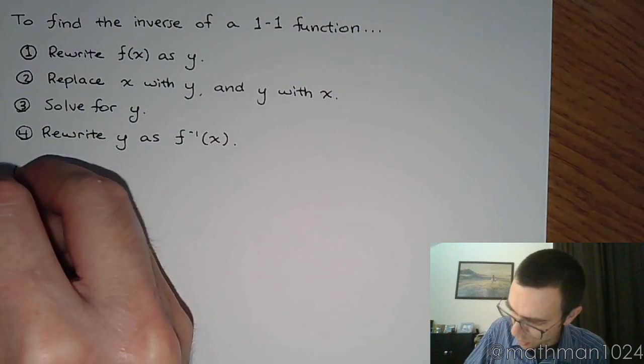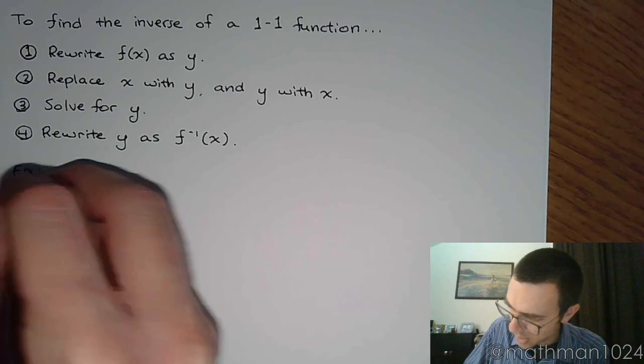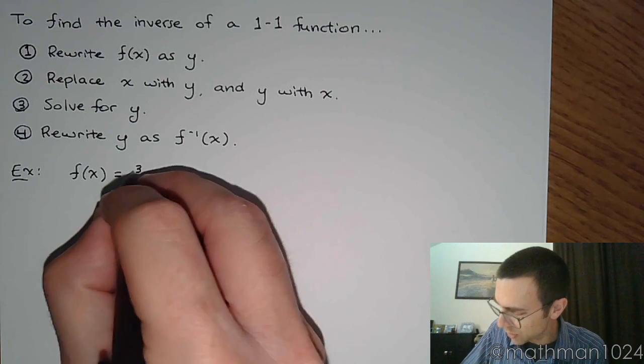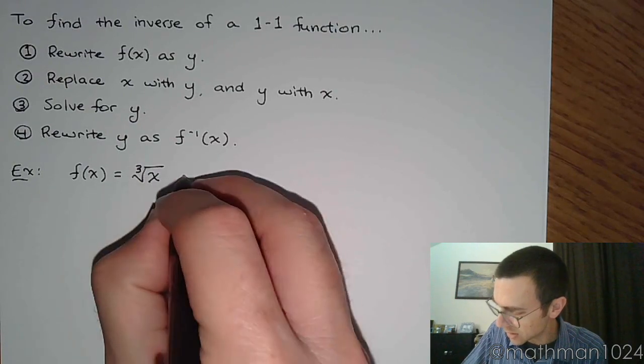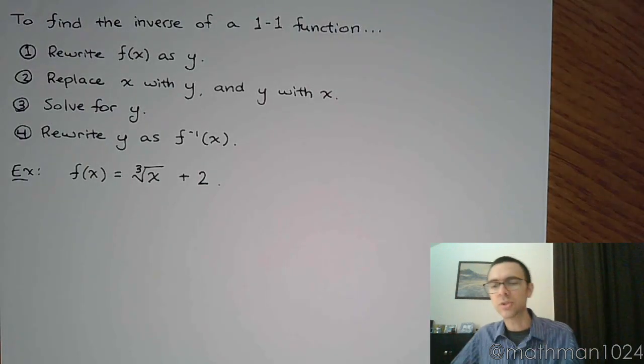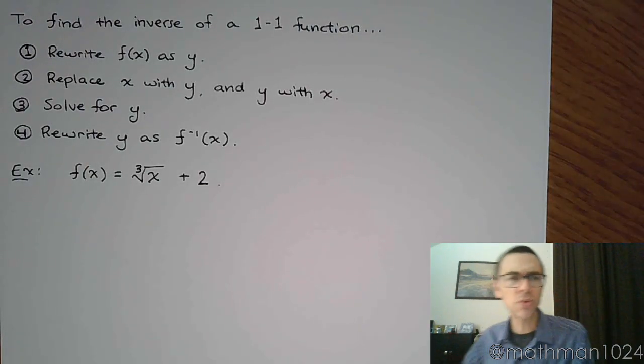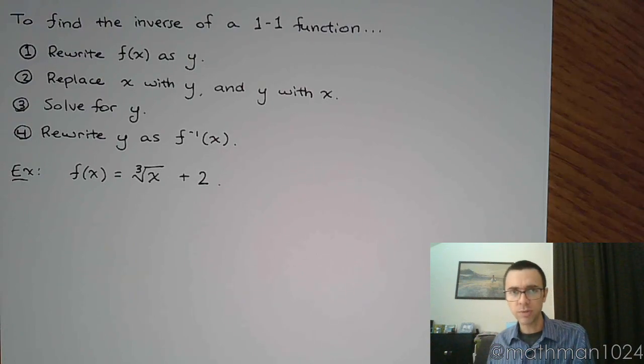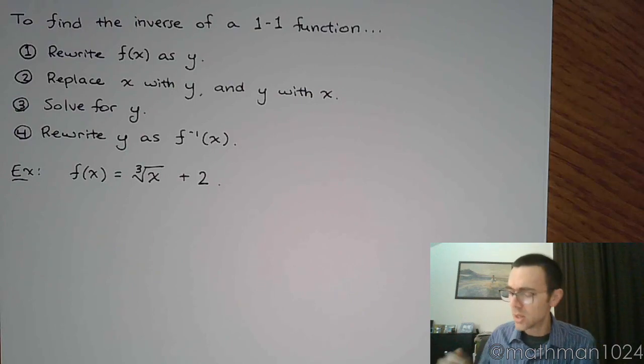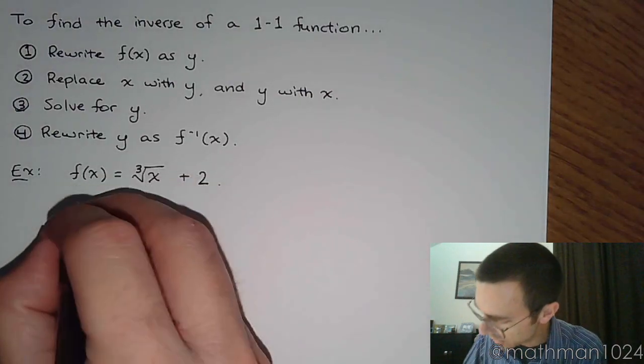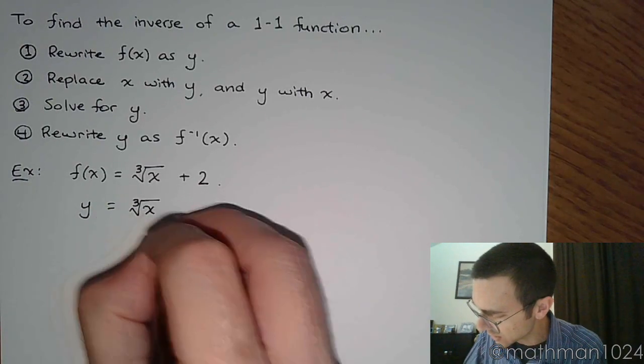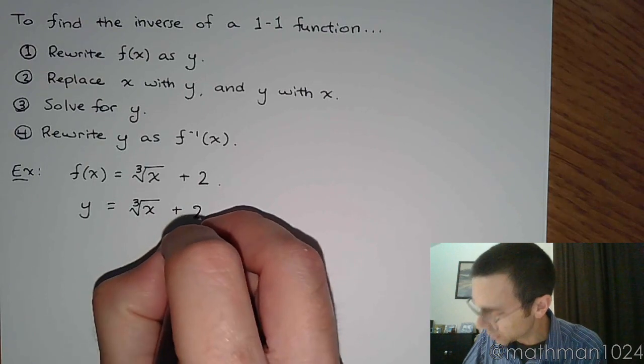So the example that we had before, when we were dealing with the graphs, we had f of x was equal to the cube root of x plus 2. So let's go through this process and see if we can find the inverse and see if the algebra gives us the same inverse as we got from just the graph. So the first step here is to rewrite f of x as y.